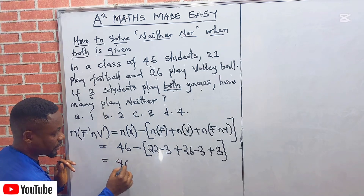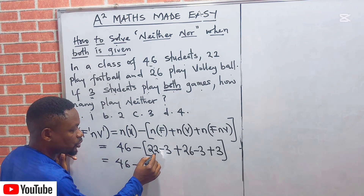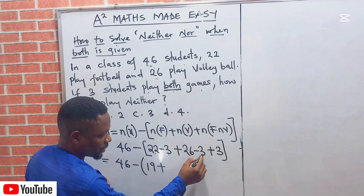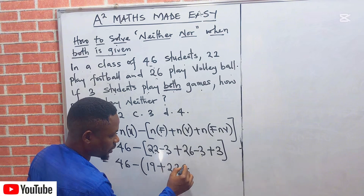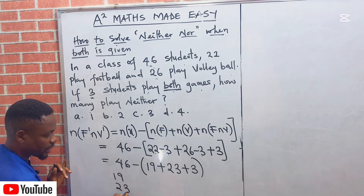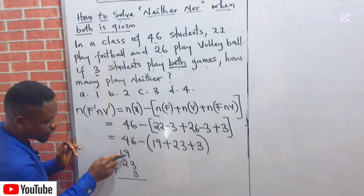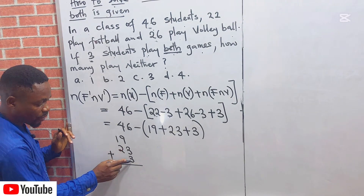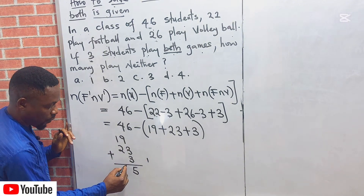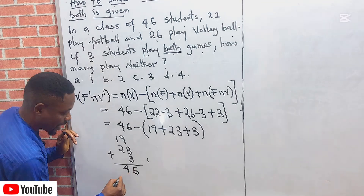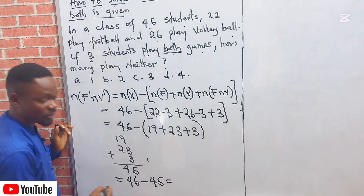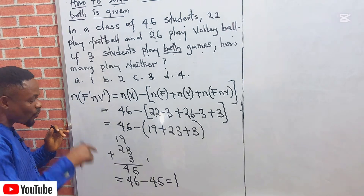So we have: 46 minus, open bracket, (22 minus 3) which gives 19, plus (26 minus 3) which gives 23, plus 3. Now we add up inside the bracket: 19 plus 23 plus 3. That gives us 45. So the universal set is 46 minus 45, which equals 1.